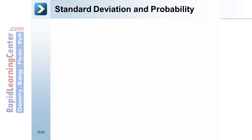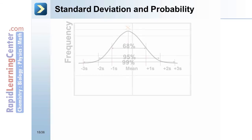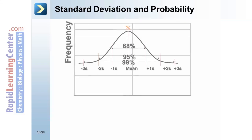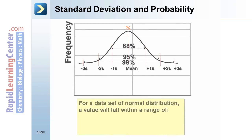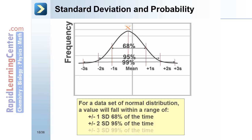Standard deviation and probability. For a data set of normal distribution, a value will fall within a range of plus or minus 1 standard deviation 68% of the time, plus or minus 2 standard deviations 95% of the time, and plus or minus 3 standard deviations 99% of the time.